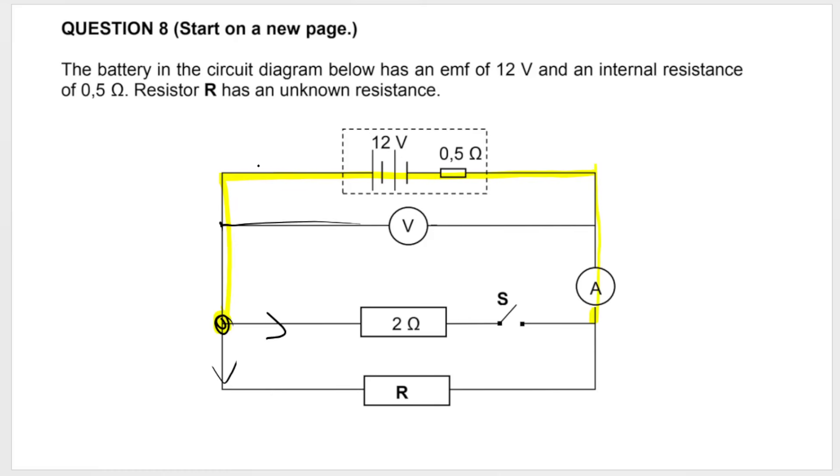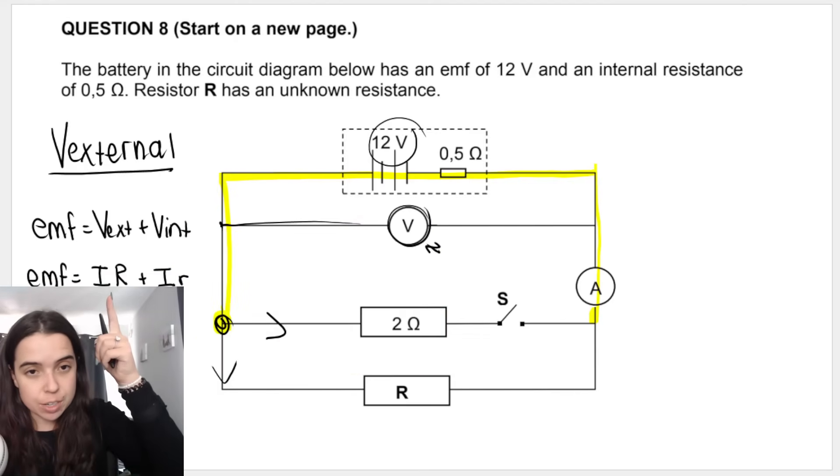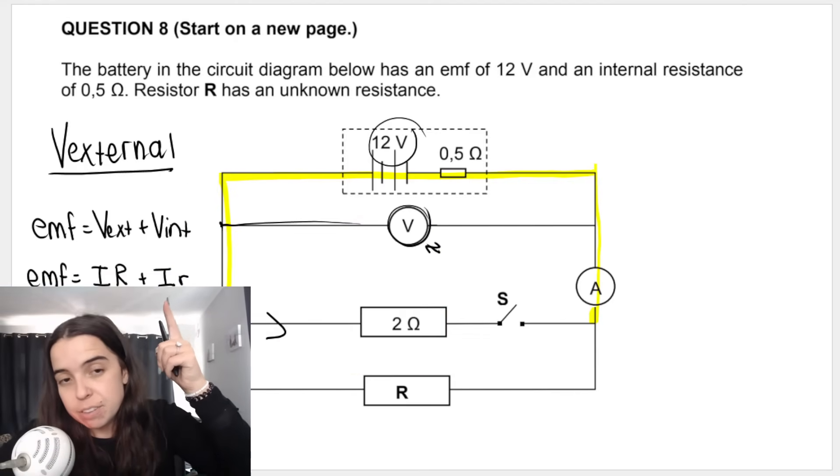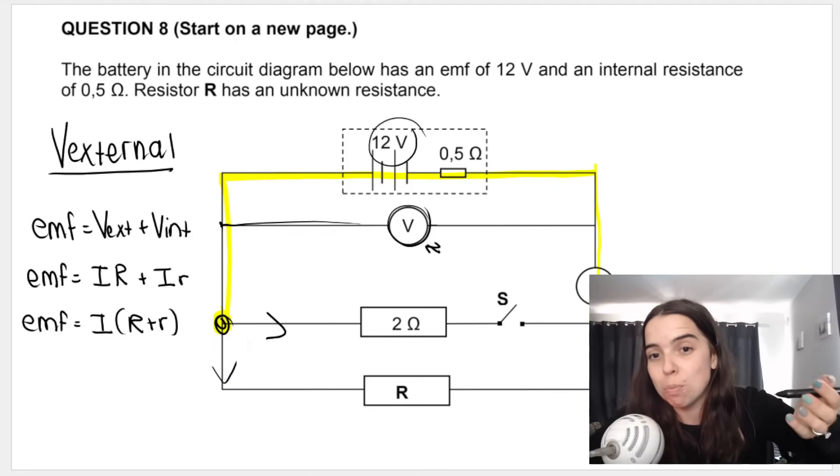The voltmeter is actually connected across the battery. When the switches in the circuit are open or when the current is not flowing, this will read the EMF. So it'll read 12 volts. As soon as the switch is closed and current is flowing through the circuit, this voltmeter reads what we call V external. Now in my other videos in this playlist I have gone over what EMF is, what V external is, and what V internal is. But here's a little bit of a recap. EMF is the V external plus V internal. We can take I out as a common factor and we get the formula that you see on your formula sheets.